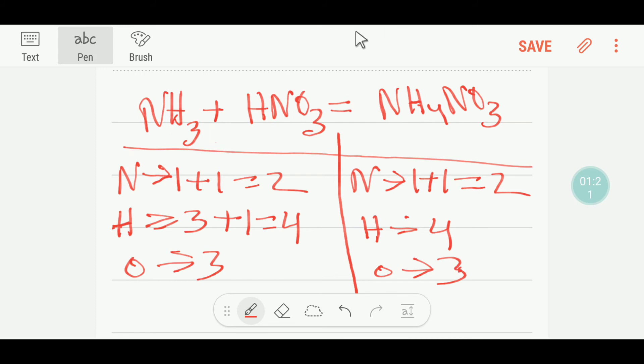Now you have to look at the number of nitrogen, hydrogen, and oxygen from both sides. So on the left hand side or reactant side, you have two nitrogen, and on the product side you also have two nitrogen. Here you have four hydrogen, here you have four hydrogen, three oxygen, three oxygen.